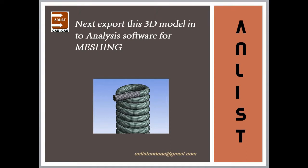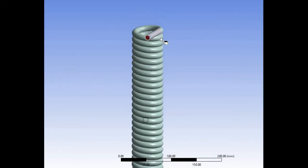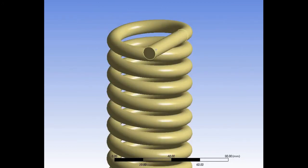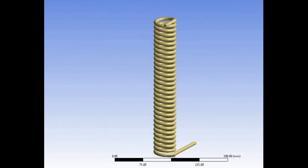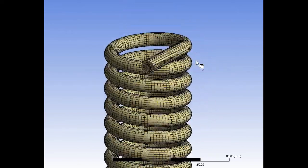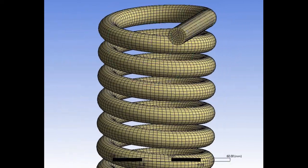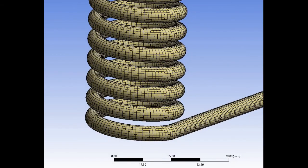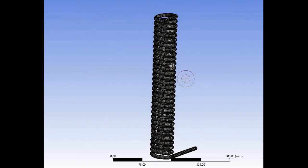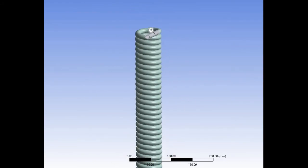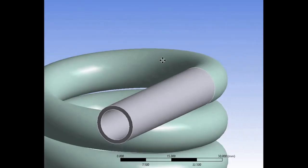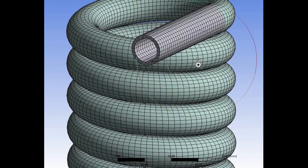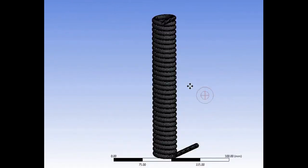Next, export this 3D model into analysis software for meshing. Here we have done rough meshing — you can do better meshing and you will get more accurate results. First we do meshing for the air fluid, then next we do meshing for the copper coil.